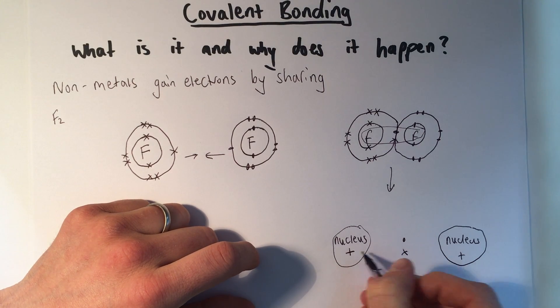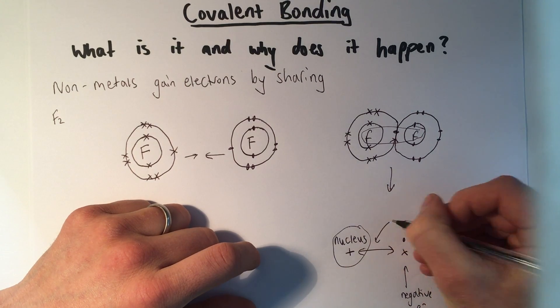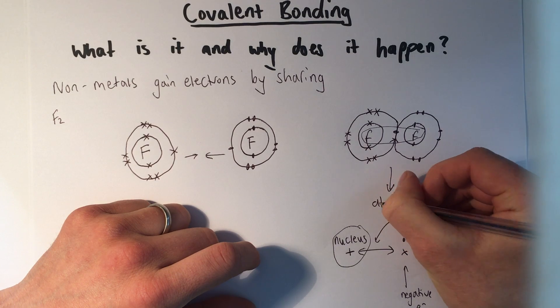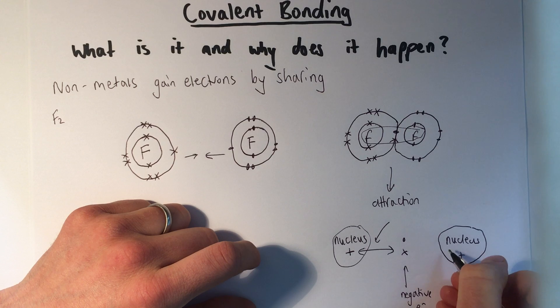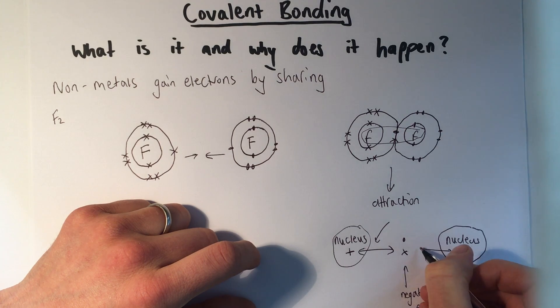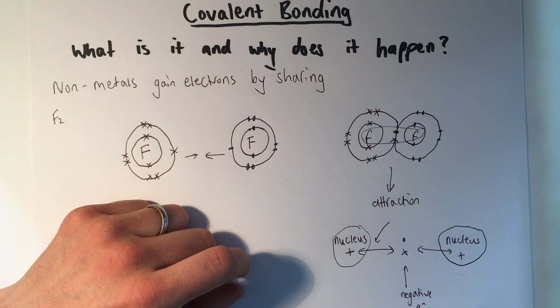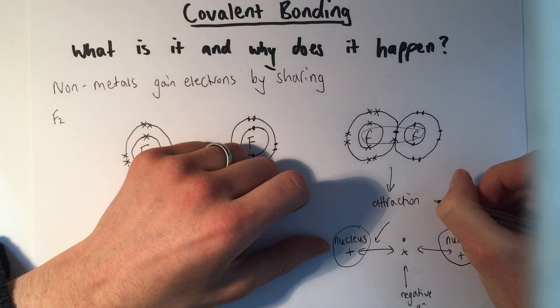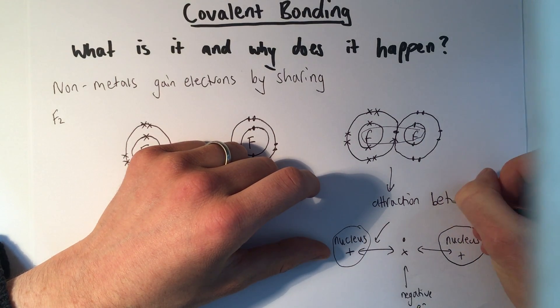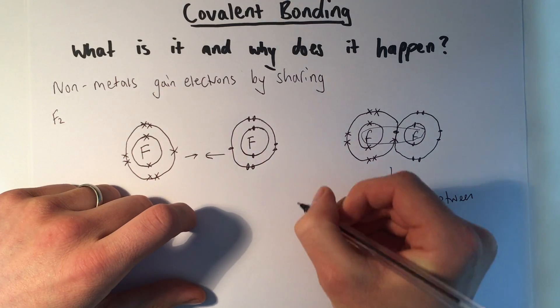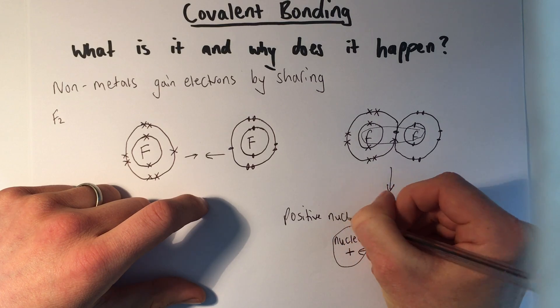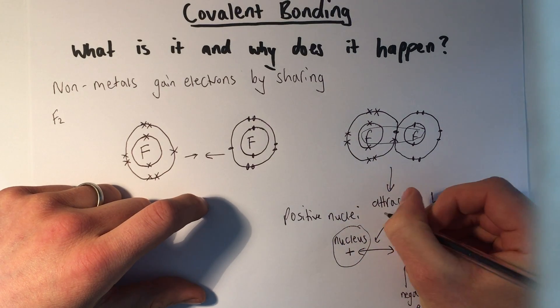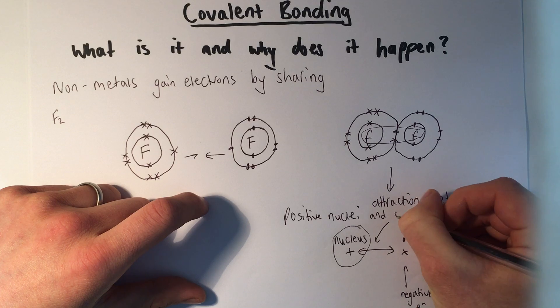And then we've got that shared pair of electrons, which are negative. So if we've got positive and then negative electrons here, what do we get between positive and negative? We get attraction. And the same here, we've got this positive nucleus and the pair of electrons there. There's attraction there as well. So a covalent bond is the attraction between the positive nuclei here and here and the shared pair of electrons.